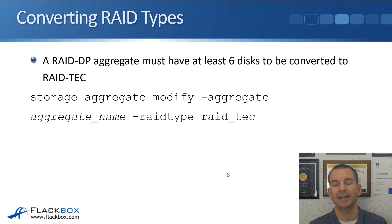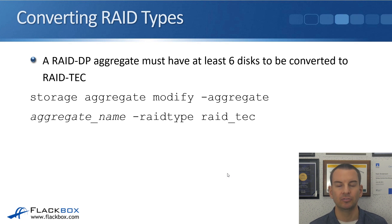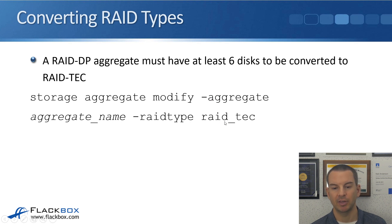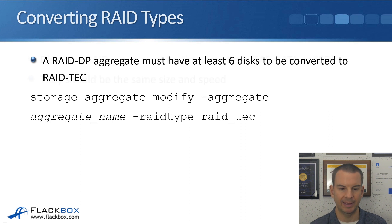A RAID DP aggregate must have at least six disks to be converted to RAID TEC. The command to do it at the command line is: storage aggregate modify -aggregate [aggregate name] -raidtype raid_tec. That will convert it to RAID TEC.